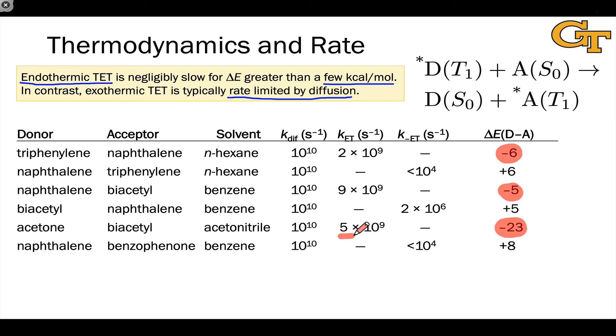A good benchmark for a rate constant of diffusion is about 1 times 10 to the 9th per second. And here we've got 5 times 10 to the 9th, 9 times 10 to the 9th, and 2 times 10 to the 9th for the rate constant of energy transfer. Extremely rapid for exothermic energy transfer, which happens when the acceptor's triplet energy, the energy of A star T1, is lower than the triplet energy of the donor, D star T1.